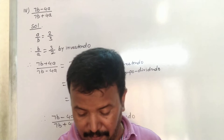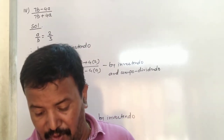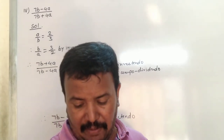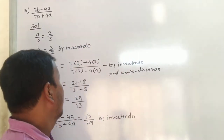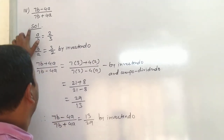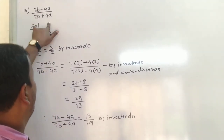The answer is 35 divided by 27. Now the fourth sum: 7b minus 4a upon 7b plus 4a. Substituting b=3 and a=2: 7 into 3 minus 4 into 2 upon 7 into 3 plus 4 into 2.